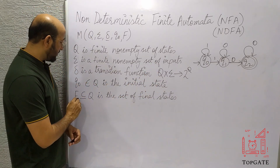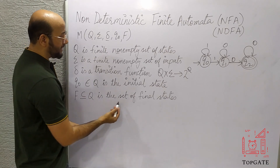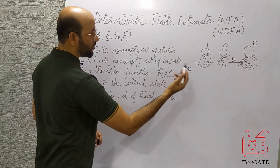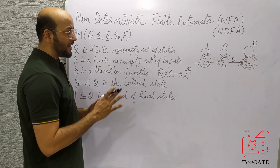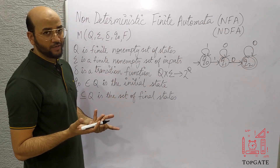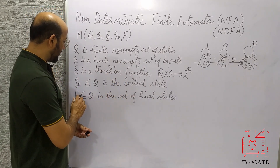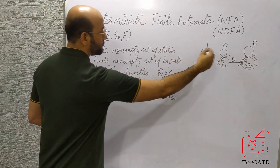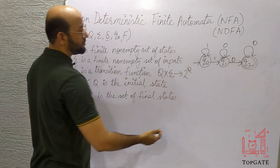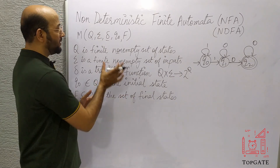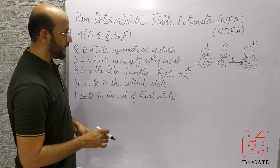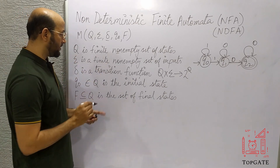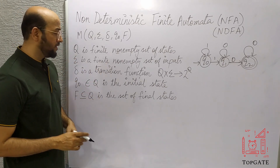The last tuple, F, is a subset of Q and is the set of final states. In an NFA or DFA, we can have any number of final states. Whatever final states exist, they will be a subset of capital Q. Now, the most important tuple is the transition function, delta.